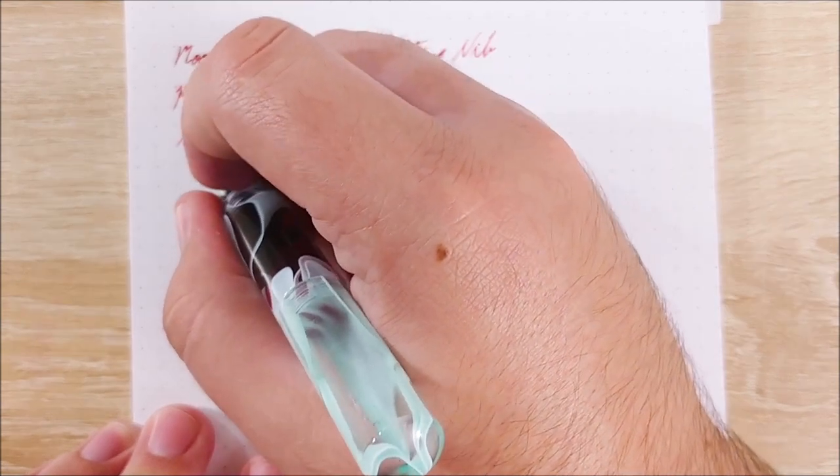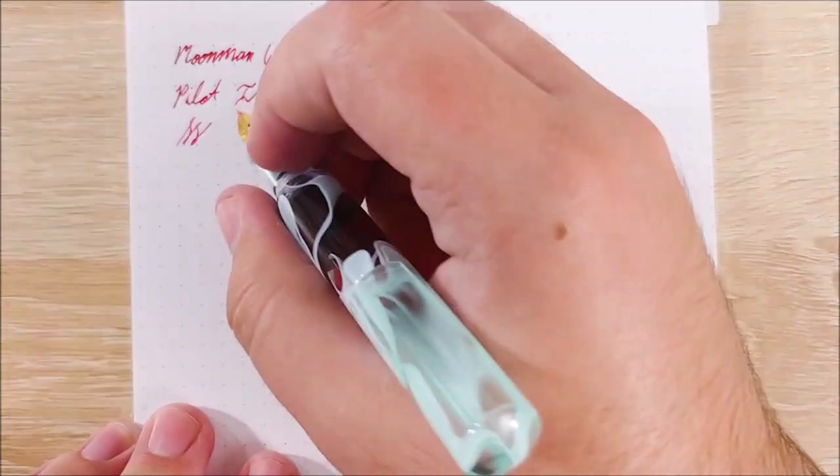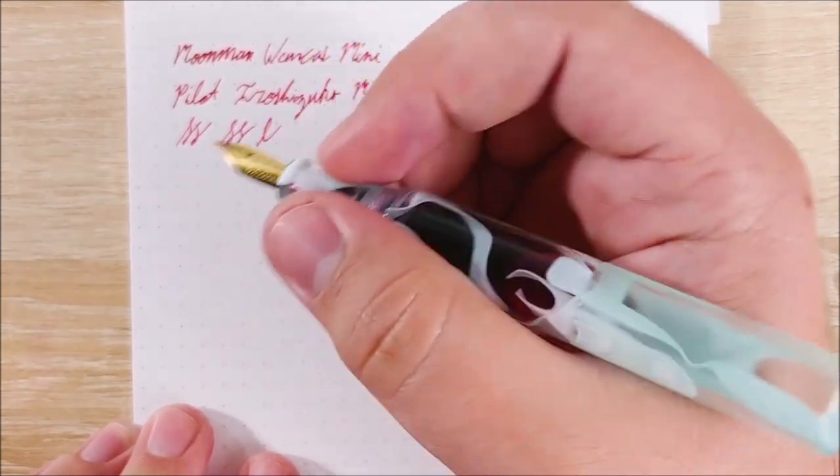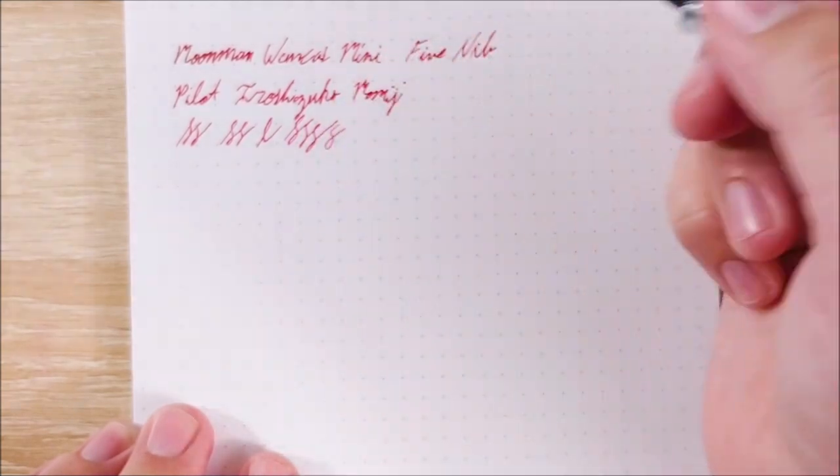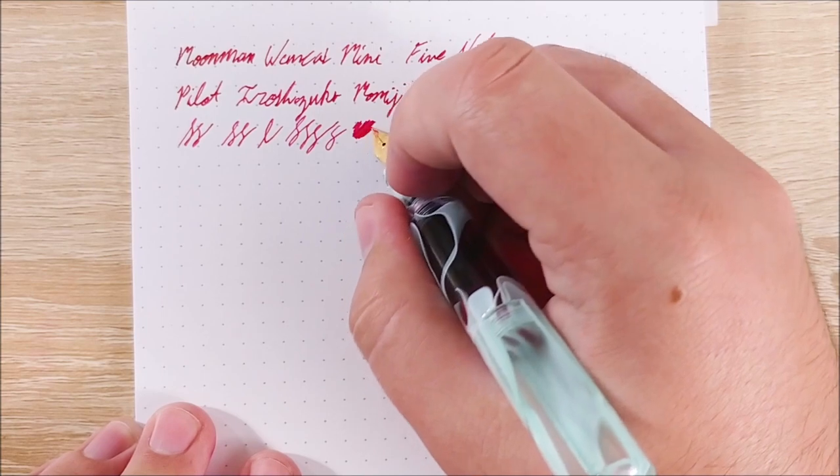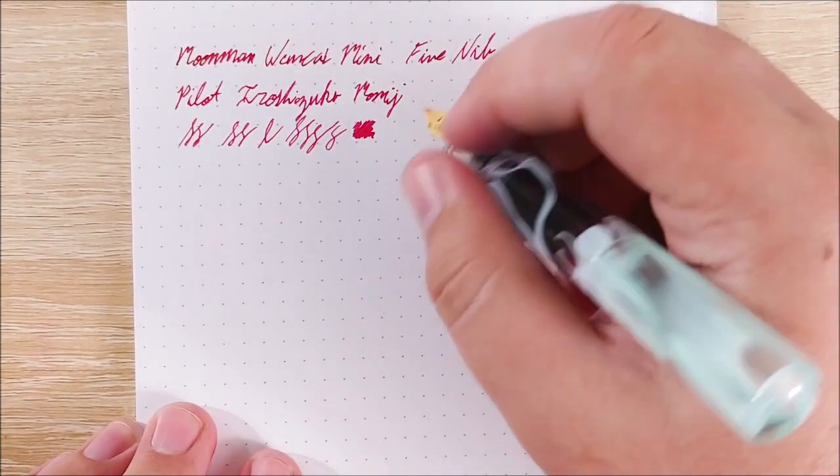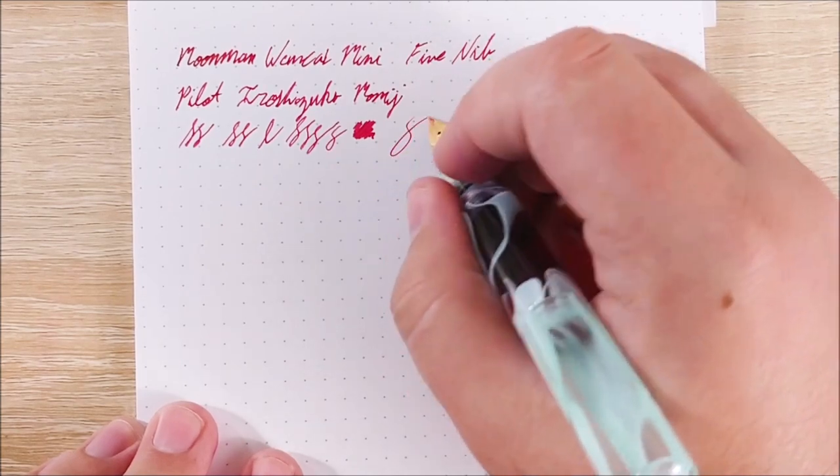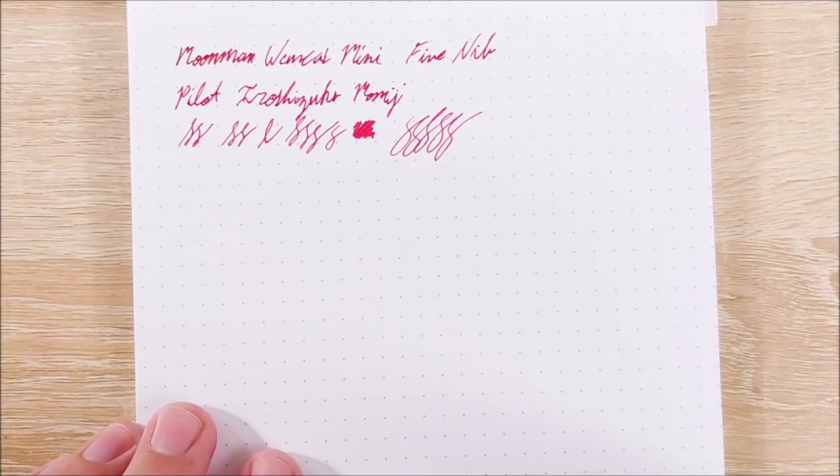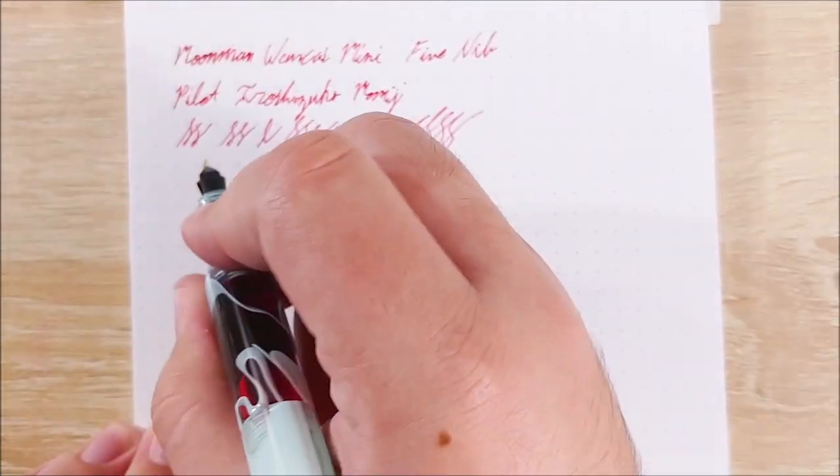So, one thing about this nib that actually surprised me is there's a fair amount of line variation that you can coax out of it. It is a steel nib. It is not a gold nib, although it is gold-colored. It's surprising. Just to give you a bit of an idea about the flow as well, you can see it's very consistent. No skips or anything like that. The first part was my fault, but once you get fast writing, it's not an issue either.